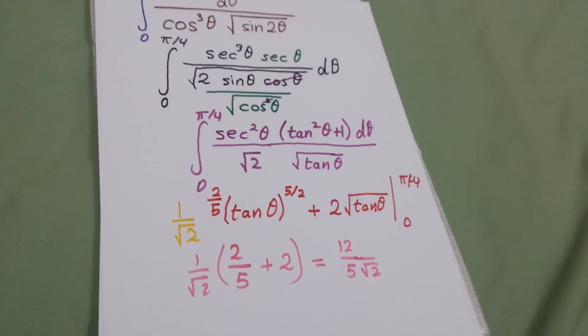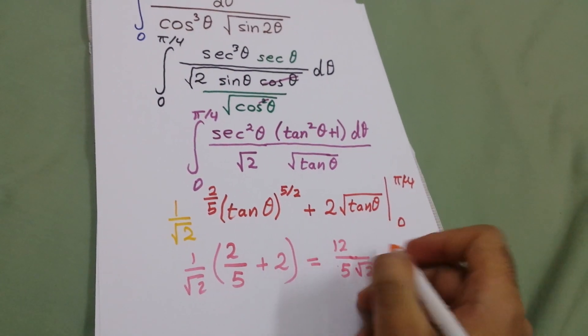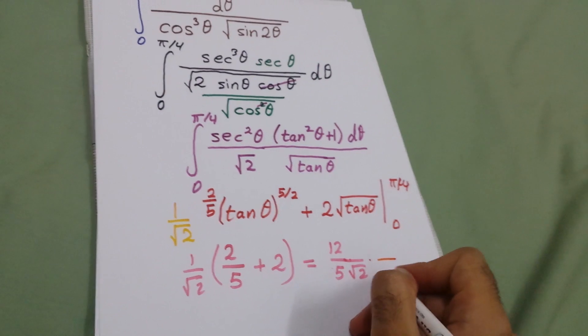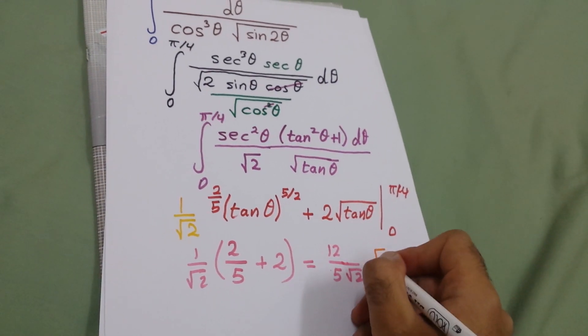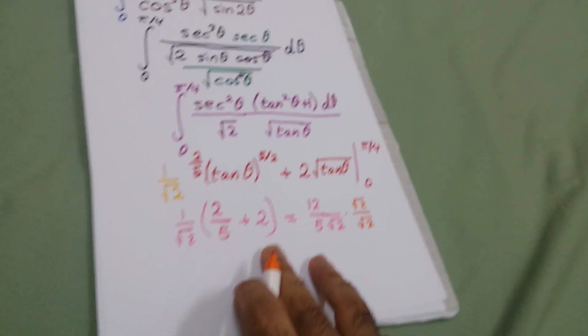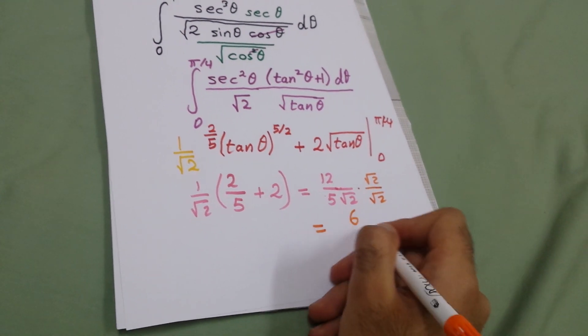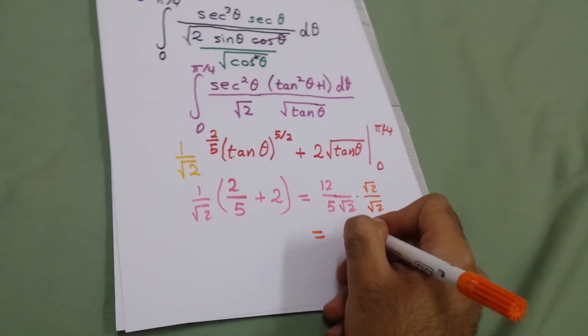We will rationalize this by multiplying by root 2, so it will be 6 root 2 over 5.